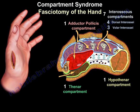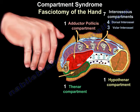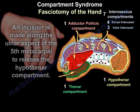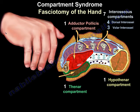Release of the hypothenar compartment may also be necessary. The incision is made along the ulnar aspect of the fifth metacarpal to release the hypothenar compartment.